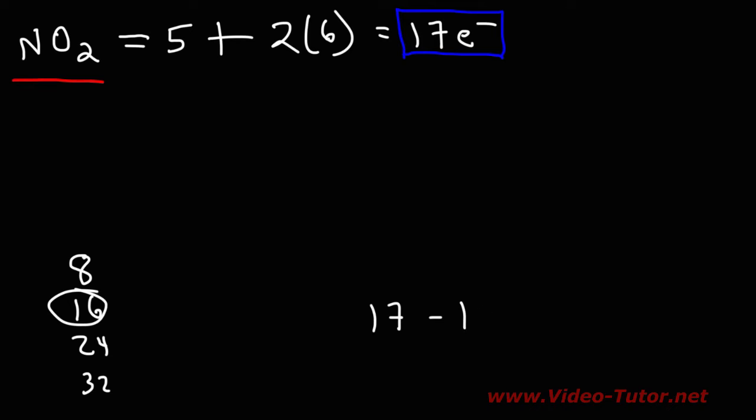So if we were to take seventeen, subtract it by sixteen, we would get one. This tells us that there's going to be one electron, or half of a lone pair, on the central nitrogen atom.